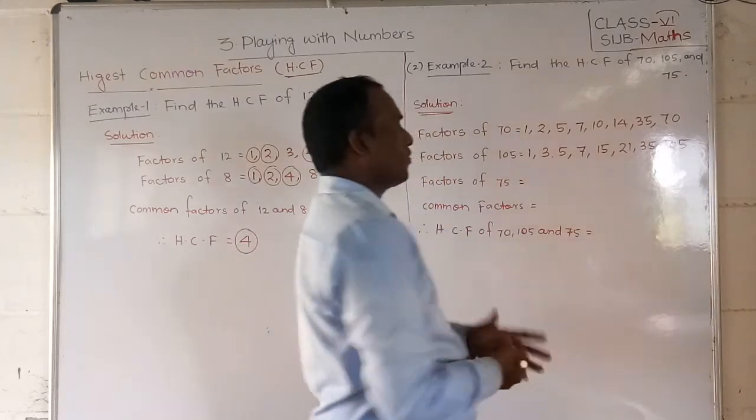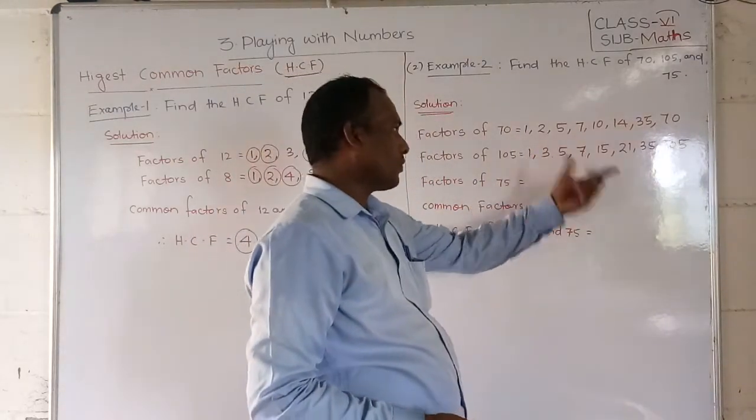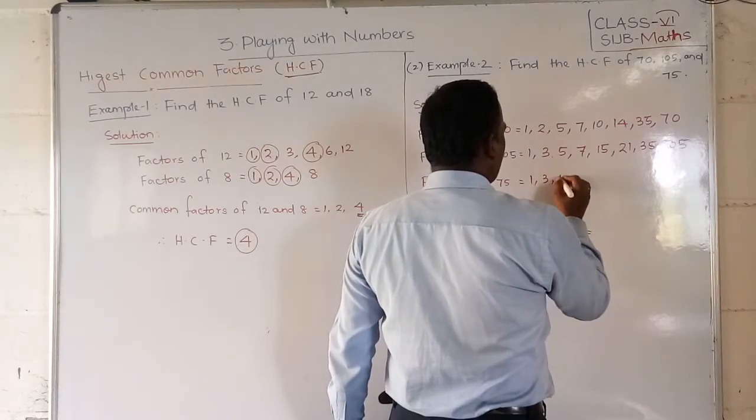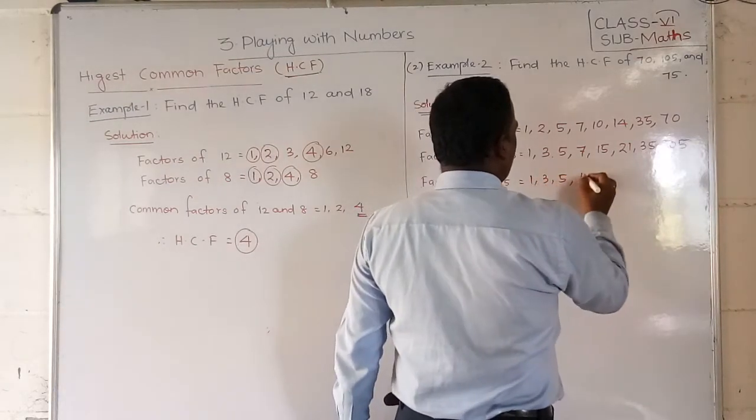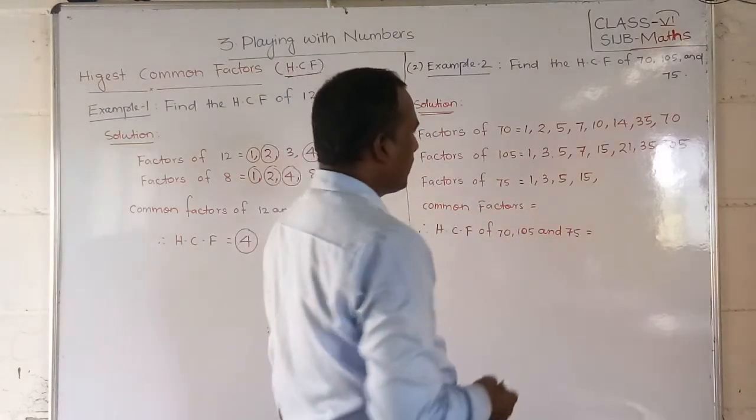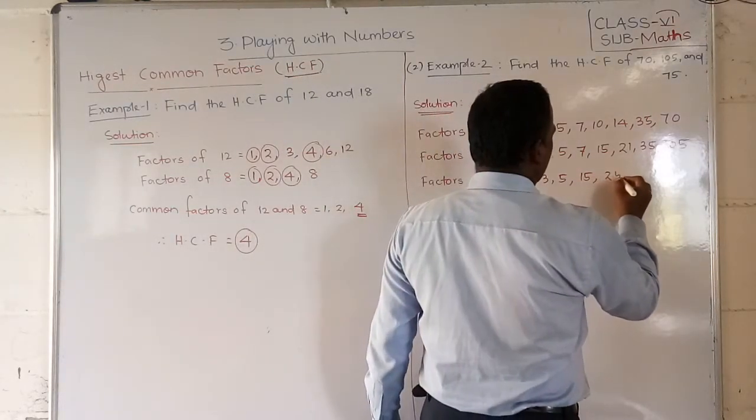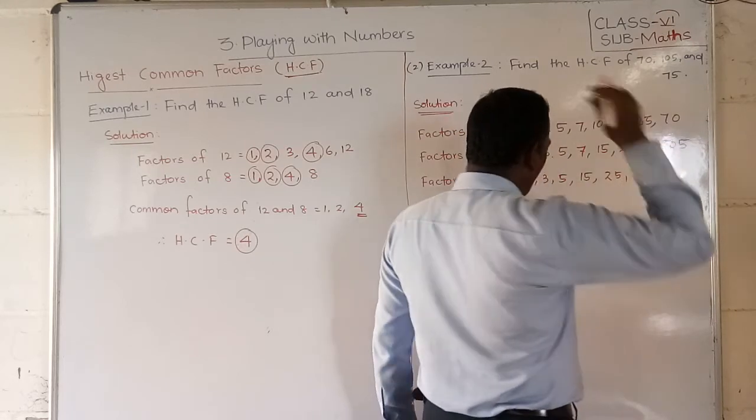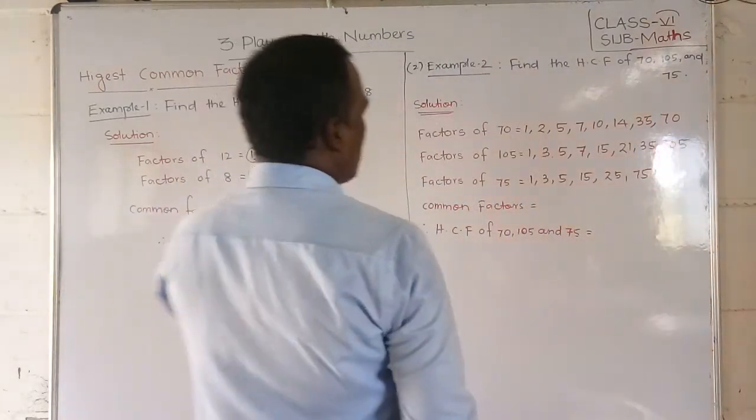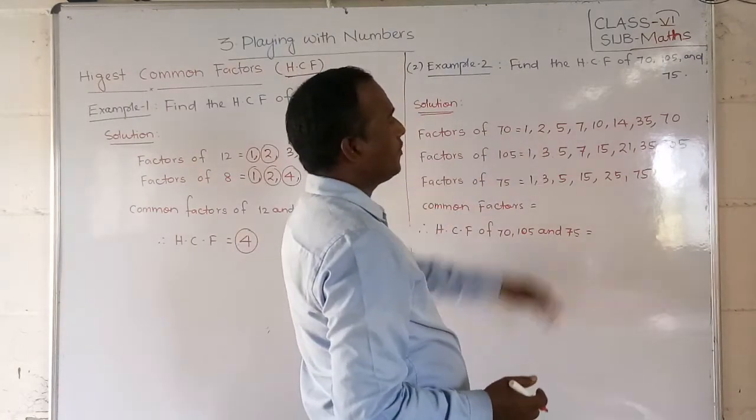So these you have to find out at home also. You can sit and find out the factors of 75. What are they students? 1, 3, 5, 15, 25, and 75.